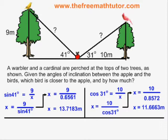I know the distance between each bird and the apple, but the question is asking which bird is closer to the apple and by how much. So that means I have to subtract 11.6663 from 13.7183, and get the difference in the distances, which is 2.0519 meters.